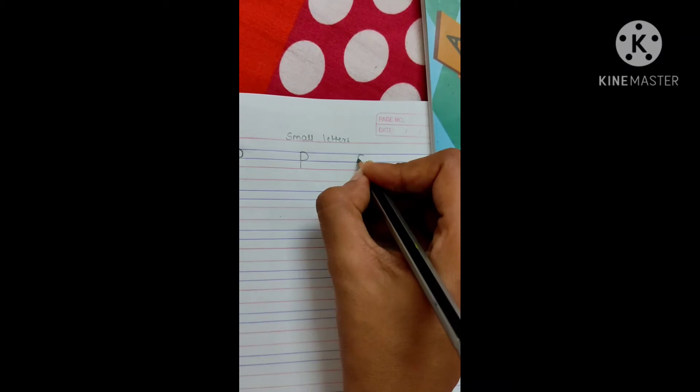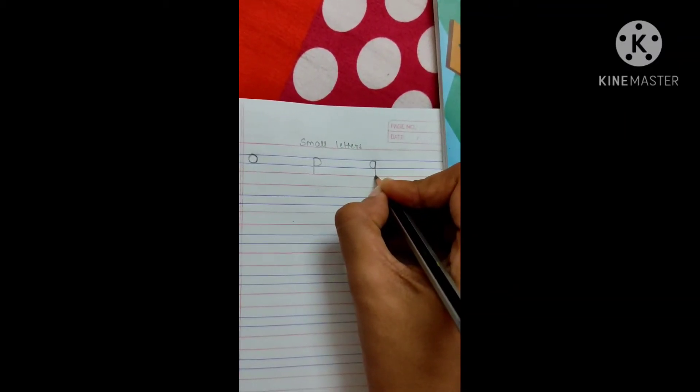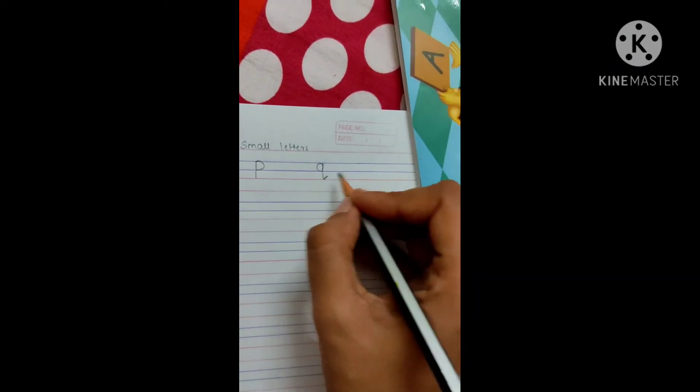O, P, now writing Q. Let's make a half circle, go up, come down and a little line of standing. Q.